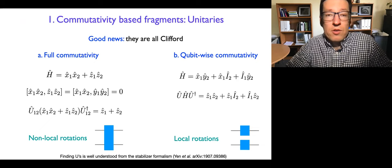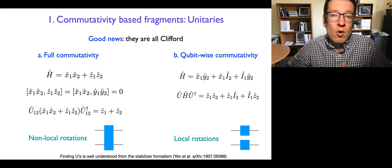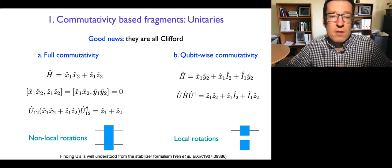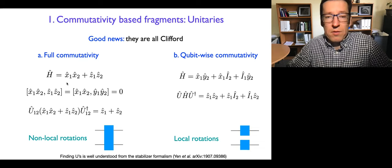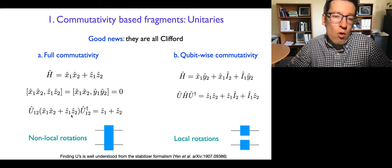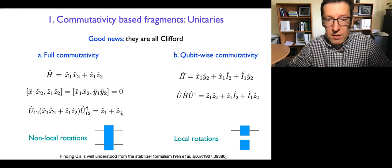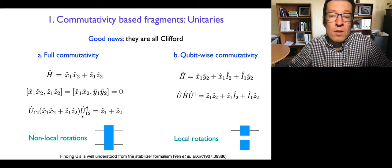Starting with a linear combination of commuting Paulis, there are unitaries that can rotate this into all-Z operators. The good news is that such unitaries are from the Clifford group — they're easy to implement and it's known how to obtain them. There are two slightly different cases. The first is what we call full commutativity, which is just normal commutativity: for example, X1X2 and similar terms commute, and you can find the unitary that rotates these into a measurable linear combination of Paulis. These rotations are generally non-local, requiring some entangling gates.